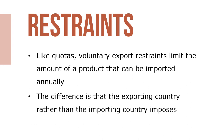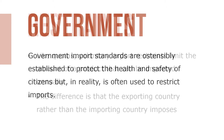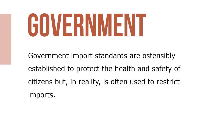Like quotas, voluntary export restraints limit the amount of a product that can be imported annually. The difference is that the exporting country rather than the importing country imposes the restraints — usually because the importing country has implicitly threatened to impose quotas. Government import standards are ostensibly established to protect the health and safety of citizens, but in reality are often used to restrict imports.